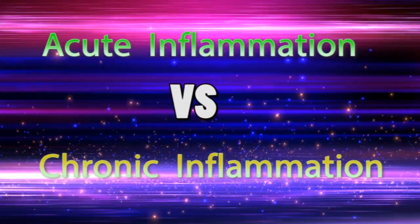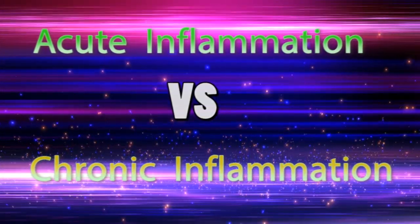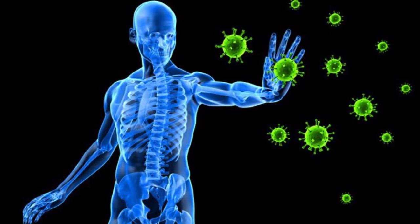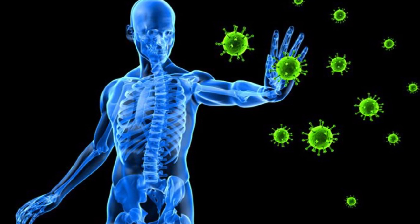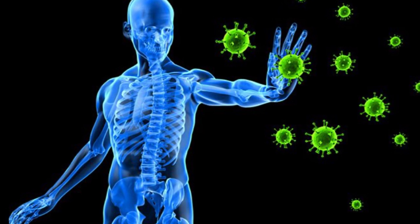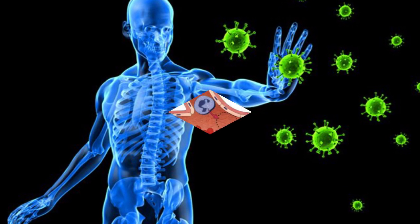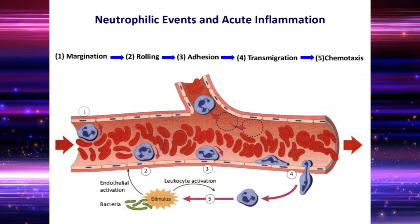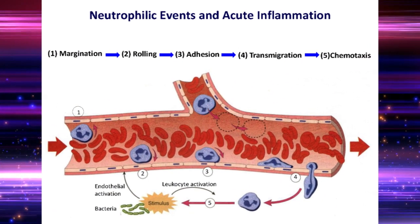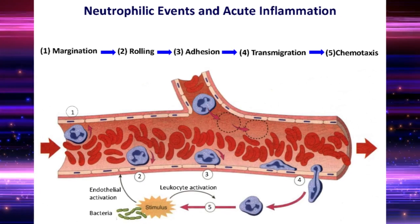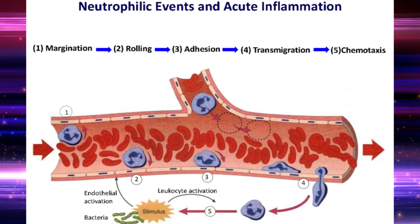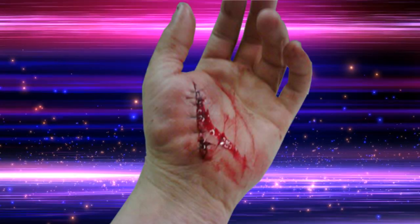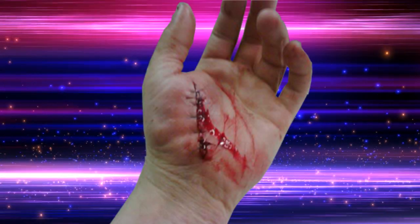Acute Inflammation vs Chronic Inflammation. Inflammation is part of the body's immune system. It is the body's normal biological response when something harmful or irritating affects a part of our body.